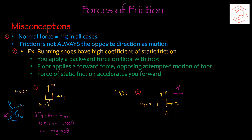Always make sure to solve for your y component first whenever solving for friction, so you can find out what the normal force equals. The second misconception is that friction is always opposite the direction of motion, which is not the case. An example is running shoes, which have a high coefficient of static friction. There's the normal and gravitational force acting on your foot, but also the applied force in the backwards direction. What drives the person forward is actually the static friction — if the running shoes didn't have a high static friction coefficient and you applied a force backwards on the floor, you'd slip. Think ice. Because your shoes have that high coefficient of static friction, when you apply a backward force on the floor with your foot, the floor applies a forward force opposing the attempted motion of your foot. The force of static friction is what allows you to accelerate forward — so in this case, friction is in the same direction as your motion.